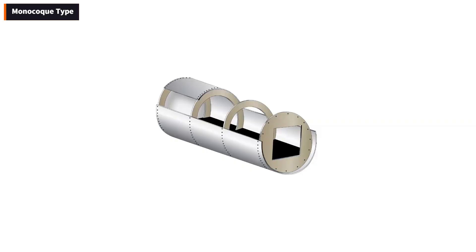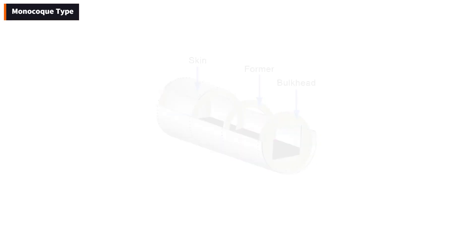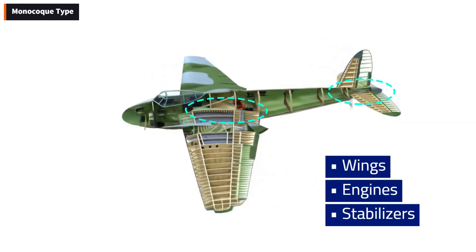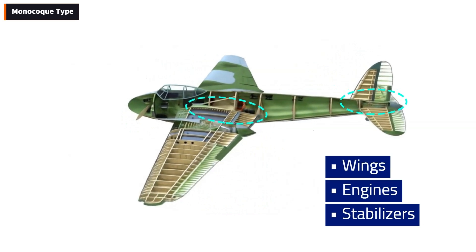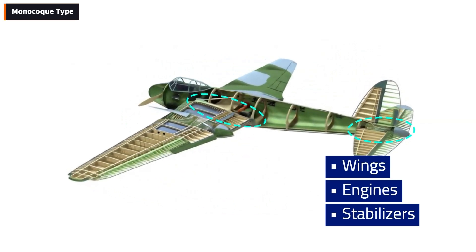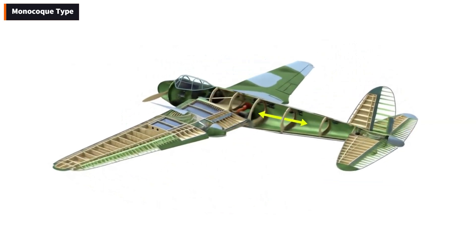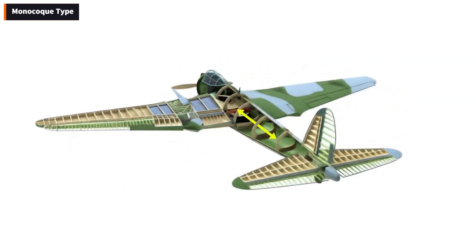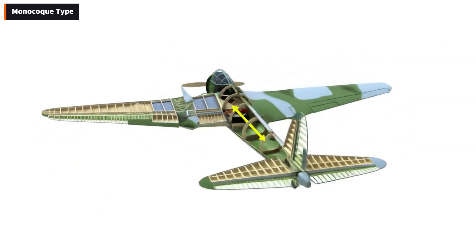In a true monocoque fuselage, formers, bulkheads, and frame assemblies are used to shape the structure. The heaviest of these components are placed at key points — such as where wings, engines, or stabilizers attach — because they carry concentrated loads. Since there are no additional bracing members, the outer skin must bear the primary stresses and keep the structure rigid.